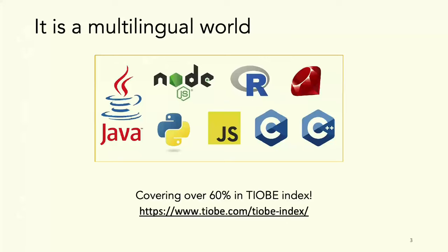We live in a world that is multilingual. There are many programming languages that dominate the software world. Based on the TIOBE index, almost 60% of languages cover a wide range from Java, Python, JavaScript, C++, and others. This shows a large diversity in programming.